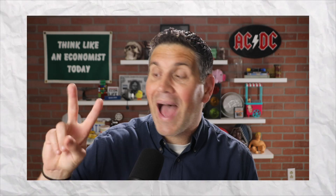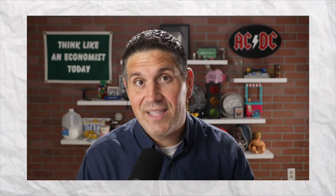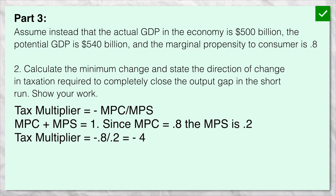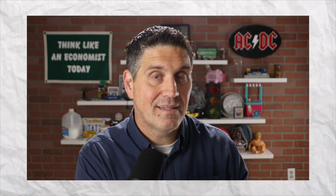Even if you knew that, there are two things that can cost you points on your test. Number one: you have to show your work — make sure you have the equation showing how you got that answer. Number two: you had to say there was an increase of government spending, not just $8 billion. You had to say an increase of $8 billion. Those little details matter. Now for question two, let's talk about taxation. The tax multiplier is the marginal propensity to consume divided by the marginal propensity to save, or one less than the spending multiplier. So if the spending multiplier was five, the tax multiplier is only four. But remember, the tax multiplier is always negative. If we're trying to close a $40 billion gap, we have to decrease taxes by $10 billion. Make sure you showed your work and said it was a decrease in taxes, not an increase.